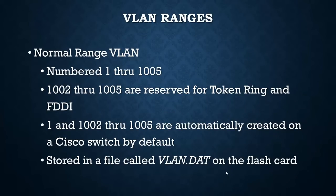There are two types of VLANs. Normal range VLANs are numbered 1 through 1005. VLAN 1 is the default VLAN - when you first turn on a switch, VLAN 1 is used. VLANs 1002, 1003, 1004, and 1005 are reserved for token ring and fiber connections. VLAN 1 and 1002 through 1005 are automatically created on a switch. If you turn on a switch and do 'show vlan,' those are what you'll see - they're created by default.